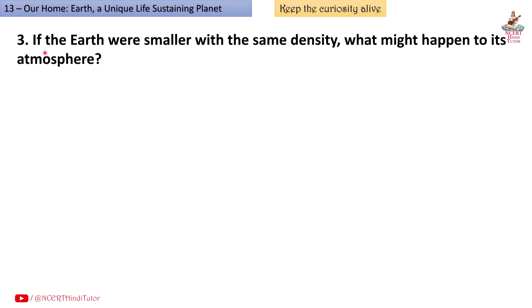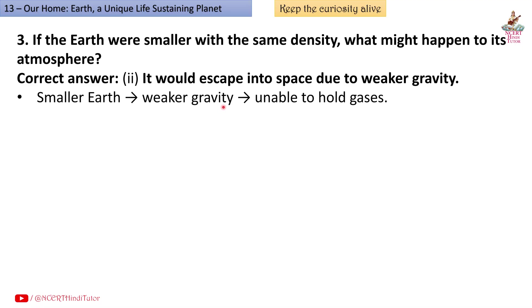Question 3: If the Earth were smaller with the same density, what might happen to its atmosphere? Correct answer: Second, it would escape into space due to weaker gravity. Smaller Earth, weaker gravity, unable to hold gases. Atmosphere would leak into space, making life impossible.